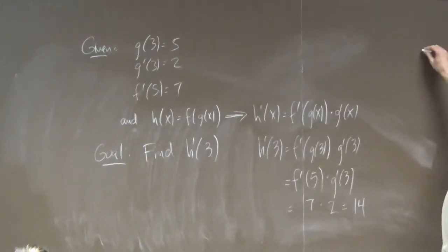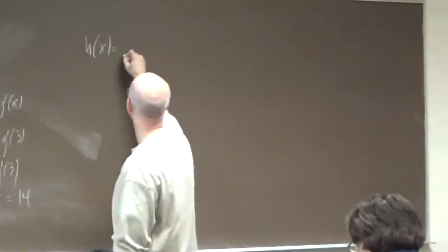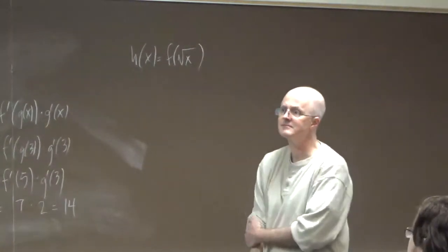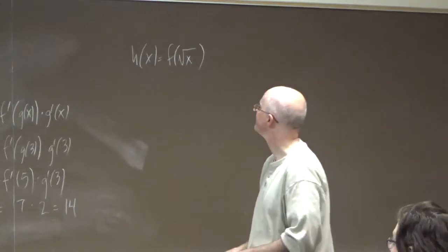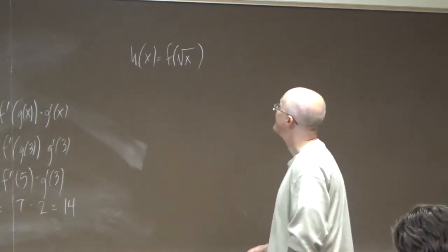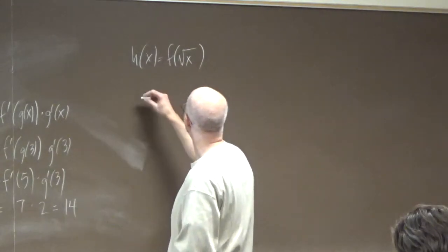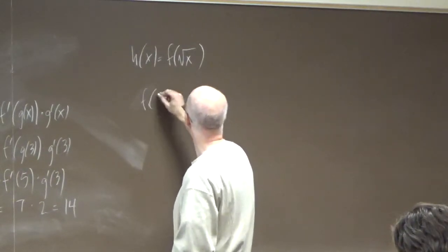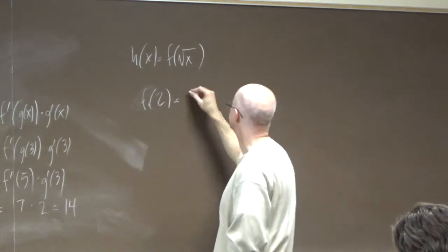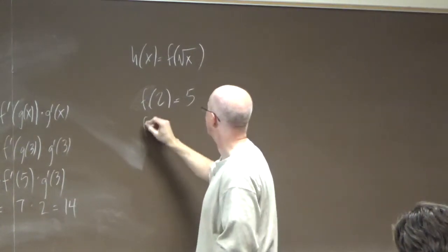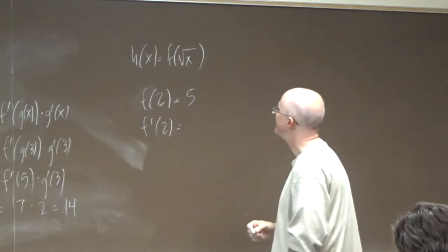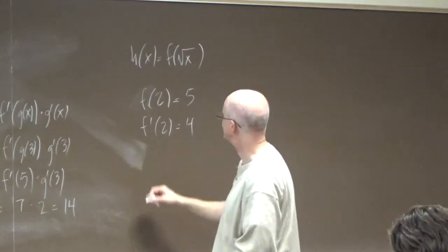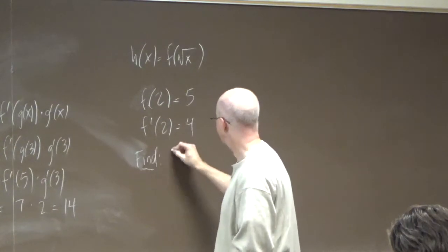Another kind of example is you might be told that h of x is f of, say, square root of x. You might also be told, let's see, I have to be careful here, that f of two is five and f prime of two.